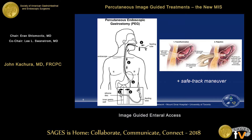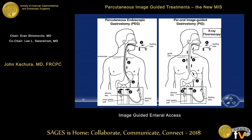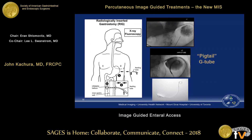For a PEG tube, you simultaneously transilluminate and palpate with your finger, hopefully not passing through anything else. When we put in a POG tube without endoscopy using only radiologic guidance, we puncture the stomach after inflating it via a nasogastric tube, gain retrograde access up the esophagus, and then pull our tube through. Usually we can select the esophagus retrogradely without using a snare.